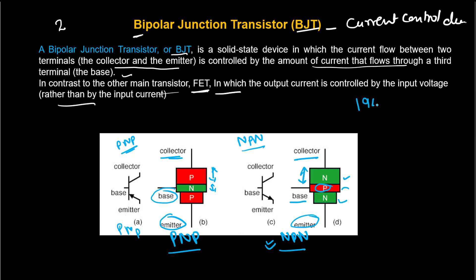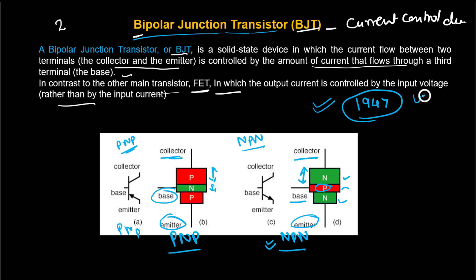BJT was basically invented in 1947 in Bell Laboratories in the US by a team of three scientists. This is a brief introduction to BJT. To summarize: BJT is a current control device invented in 1947 at Bell Laboratory. There are two types — PNP and NPN — and I have explained the differences between them. Now let's see the next transistor.